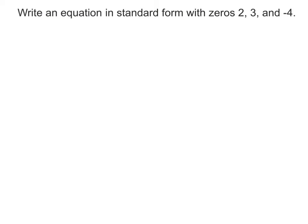For these problems, we're going to be writing equations of a polynomial in standard form. Standard form is different than factored form — it takes a little more work to get there. We're going to be using the zeros, which are basically where the graph crosses the x-axis. So if it crosses the x-axis at 2, our factor is x minus 2.